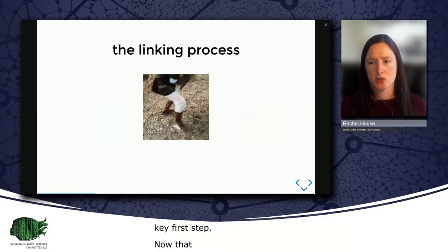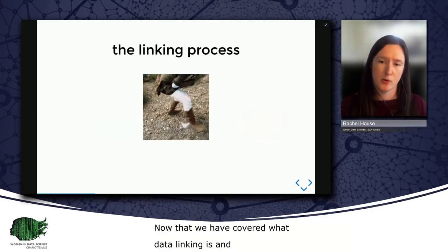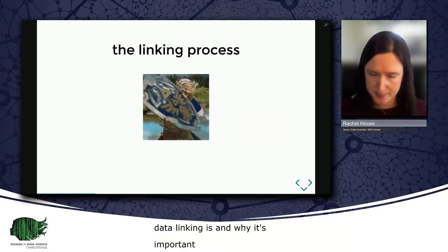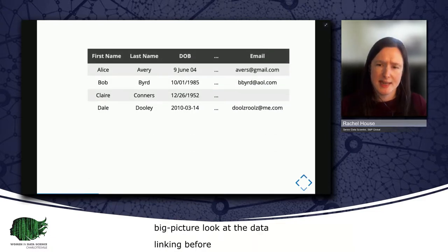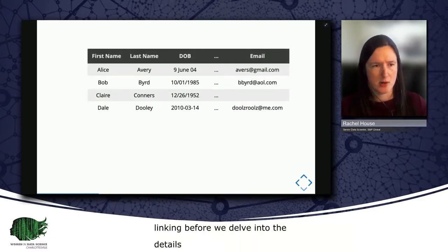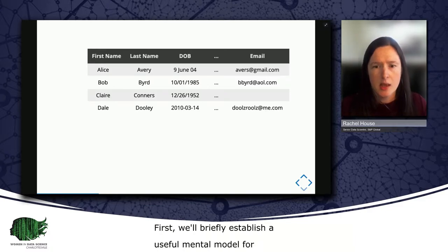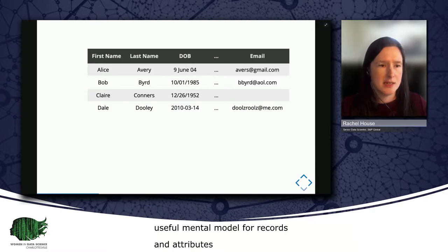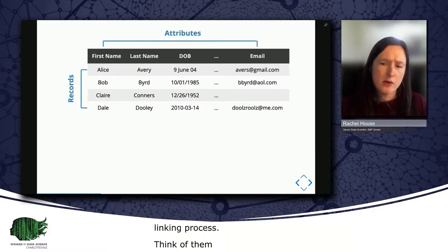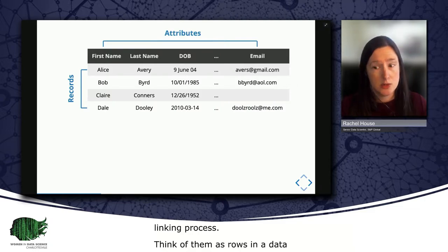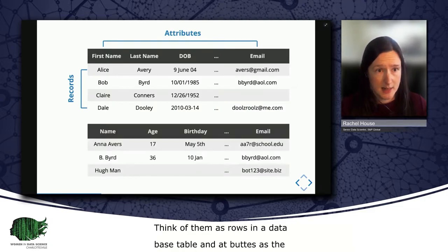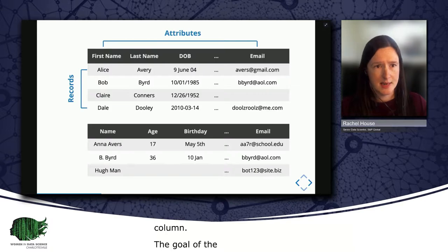Now that we've covered what data linking is and why it's important, let's take a big picture look at the data linking process before we delve into the details of each step. First, we'll briefly establish a useful mental model for records and attributes as we discuss them in the context of the linking process today. You can think of records as rows in a database table, and attributes as the columns. And the overarching goal of the linking process is to identify records in different datasets that correspond to the same entity.